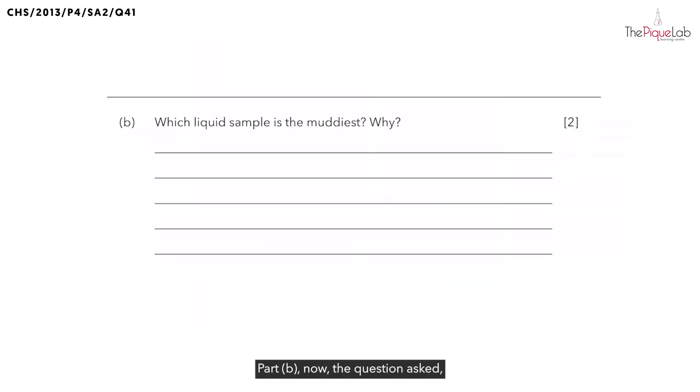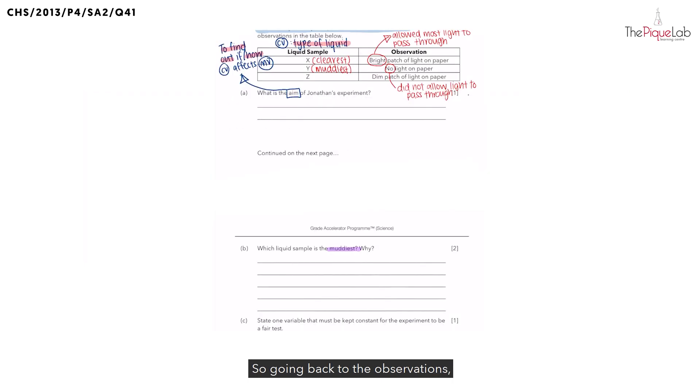Part B. Now the question asks, which liquid sample is the muddiest? So going back to the observations, we have concluded that liquid sample Y was the muddiest. Now remember, whenever you are choosing your liquid sample,